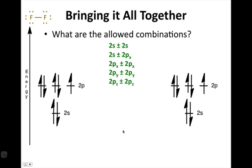And they're listed for you here. The 2s with itself on the other atom, the 2s with the 2px, which is aligned with the internuclear axis, so we're allowed to make that combination.